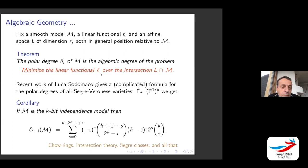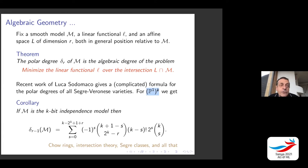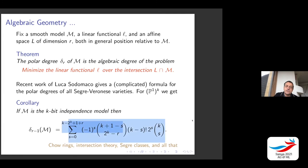Recent work of Luca Sodomaco, a former student of Giorgio Ottaviani, gives a very nice explicit formula for polar degrees of all Segre-Veronese varieties. Segre-Veronese varieties are the algebraic-geometric versions of the independence models discussed here. For P^1 to the K — the independence model for K binary random variables — the (r-1)-th polar degree giving the algebraic complexity for K-bit independence is an explicit alternating sum formula in terms of K and r. Behind all that lies Chern classes, intersection theory, Segre classes, and related machinery.